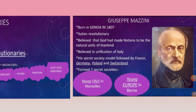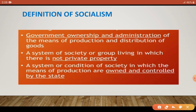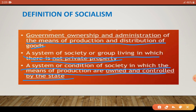Now the main topic: the coming of socialism. Socialism — what is it? Its definition: government ownership and administration of the means of production and distribution of goods; a system of society in which there is no private property; a system or condition of society in which the means of production are owned and controlled by the state, and the means of production are equally distributed.